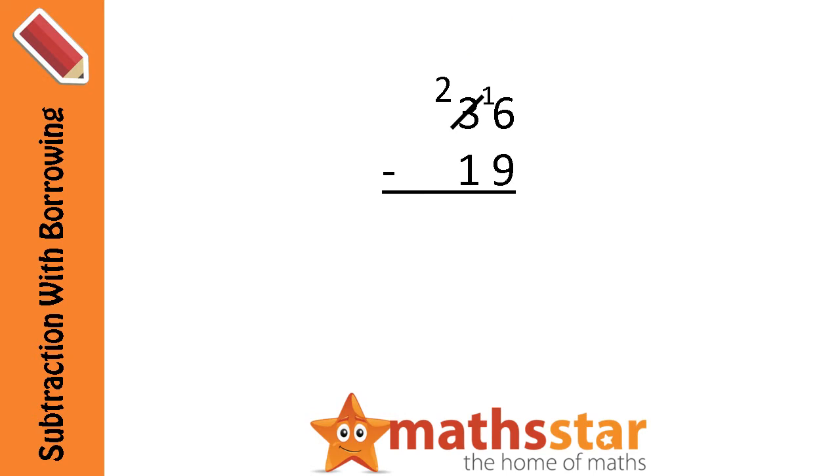And now we can do our calculation. So 16 minus 9 equals 7, and 2 minus 1 equals 1. So now we have our answer: 36 minus 19 equals 17.